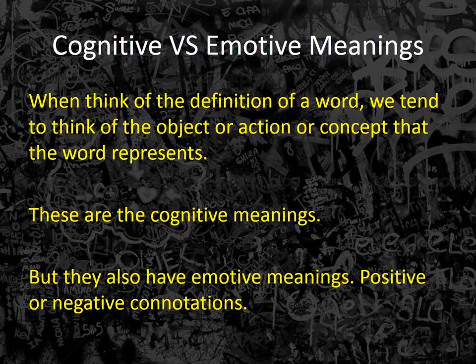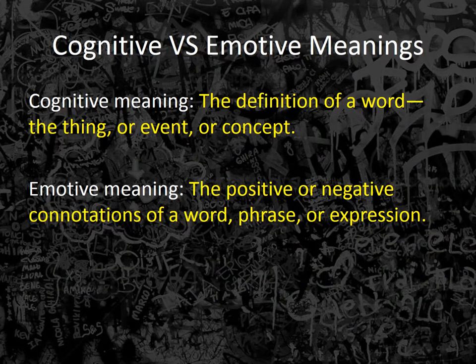Cognitive versus emotive meanings. Words are not simple things — they convey much more information than their technical or dictionary definitions alone. They can convey information both by the way they are said and by the context within which they are said. The cognitive meaning is what you think of as the definition: the concept, thing, event, action, and so forth. The emotive meaning is the positive or negative connotation of that particular word or phrase.